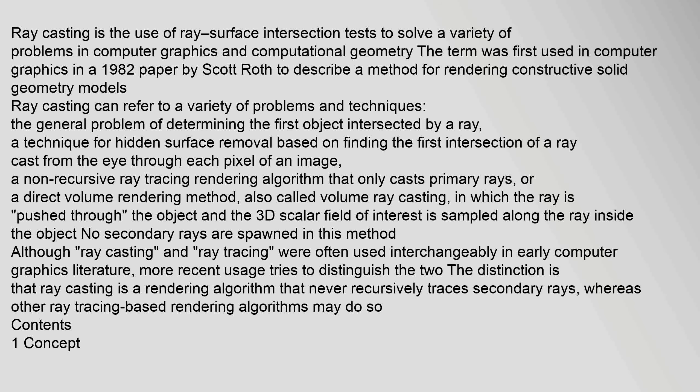The object and the 3D scalar field of interest is sampled along the ray inside the object. No secondary rays are spawned in this method. Although ray casting and ray tracing were often used interchangeably in early computer graphics literature, more recent usage tries to distinguish the two. The distinction is that ray casting is a rendering algorithm that never recursively traces secondary rays.